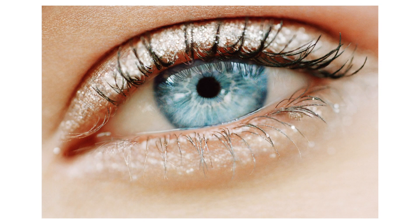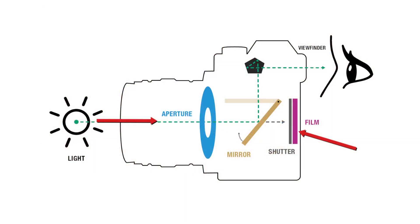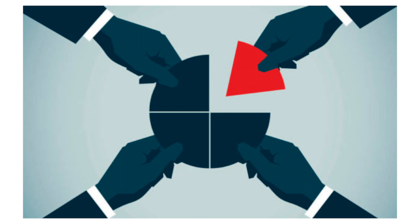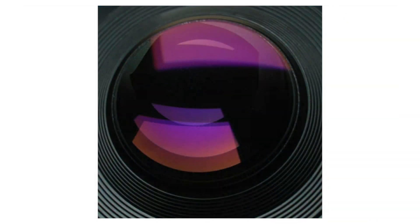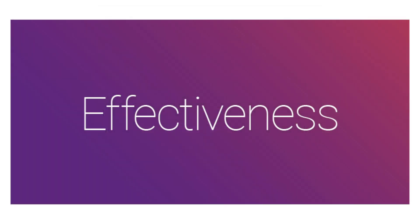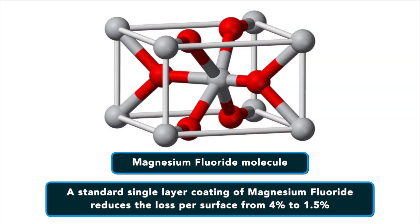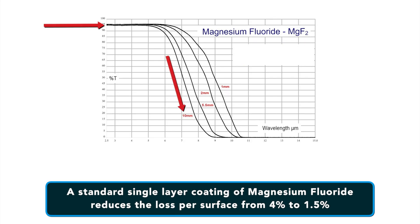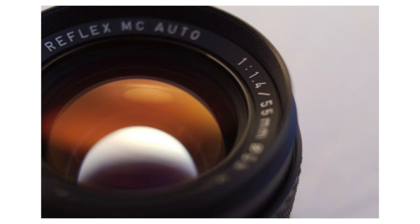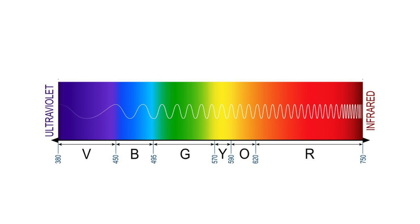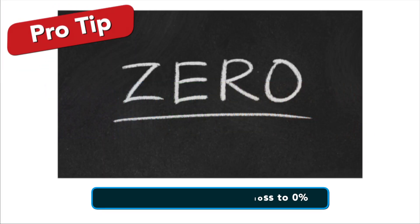96% of the light reflecting off an object makes its way to your camera sensor, and 4% is lost — for each element. Lenses can be coated with special chemicals to lessen the effect. A standard single layer coating of magnesium fluoride reduces the loss per surface from 4% down to 1.5%. Multi-layer coatings can reduce the loss per surface to less than 0.1%. However, no coating can reduce the loss to zero. You should always get multi-coated lenses as they will improve image quality.